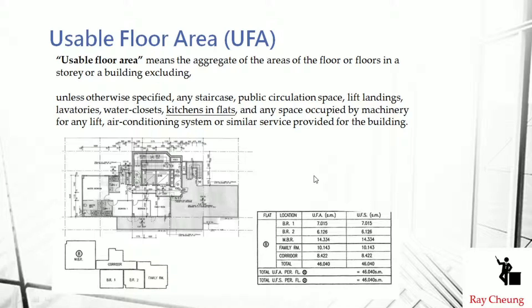You also need to know the basic term UFA — Usable Floor Area. UFA is the area defined by use, and we use it to calculate the required exit staircases for the Means of Escape. It is the aggregate area of all floors, but you need to deduct the area for public circulation, staircases, and kitchens. For example, in a typical residential building, the master bedroom, corridor, and bedroom all count toward UFA, but the external staircase area is deducted.